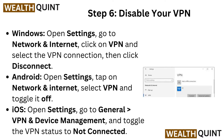Step 6: Disable your VPN. On Windows, open settings, go to network and internet, click on VPN, select the VPN connection, then click disconnect. For Android, open settings, tap on network and internet, select VPN, and toggle it off. For iOS, open settings, go to general, then VPN and device management, and toggle the VPN status to not connected.